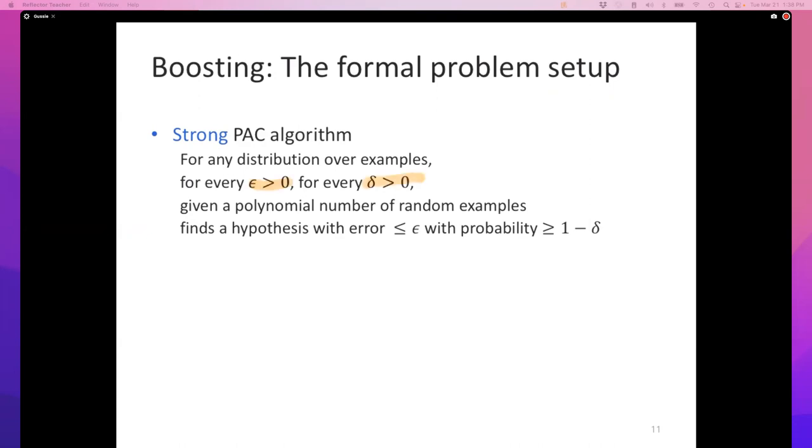For any distribution over the examples and for every ε > 0, for every δ > 0, given a polynomial number of random examples, your learning algorithm will produce a hypothesis whose error is less than ε with probability ≥ 1 - δ.